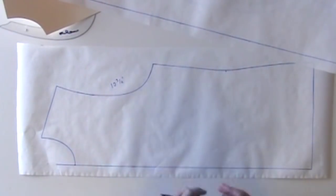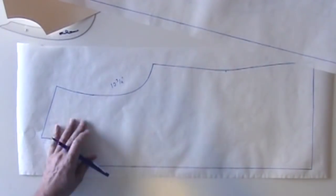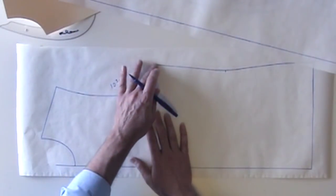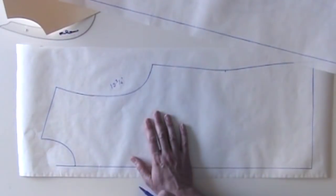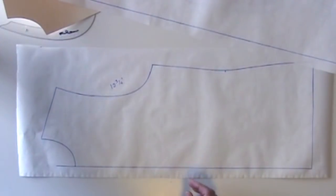Ideally, the front armhole slightly less, but because we're doing a very unfitted or loosely fitted garment, they can be the same. So how do we shorten this armhole in the front? There are a number of ways to do it.